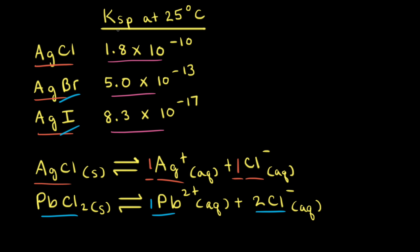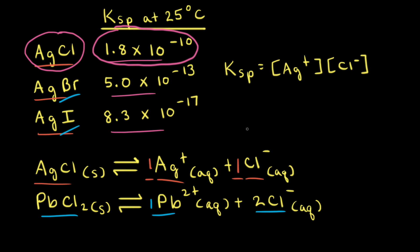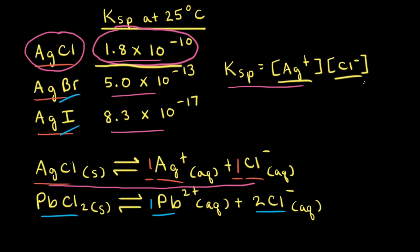Since silver chloride has the highest Ksp value of these three, silver chloride is the most soluble salt. Looking at the Ksp expression for silver chloride from the balanced equation, the higher the value for Ksp, the higher the concentration of these ions at equilibrium, which means that more of the solid must have dissolved. Therefore, silver chloride has the highest solubility out of these three salts.